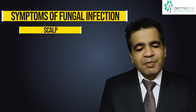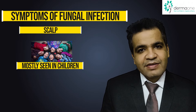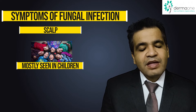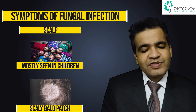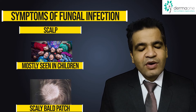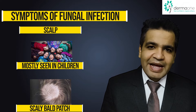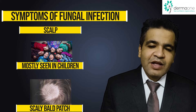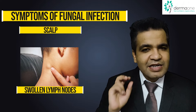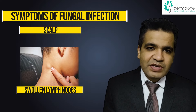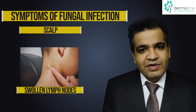On the scalp, it is typically children who get fungal infections. It may lead to a rough, scaly bald patch or a patch with less hair. There may be some black dots visible on the skin, and the area behind the neck may get a little swollen if the infection is severe. This should be treated early, otherwise the children may lose their hair permanently.